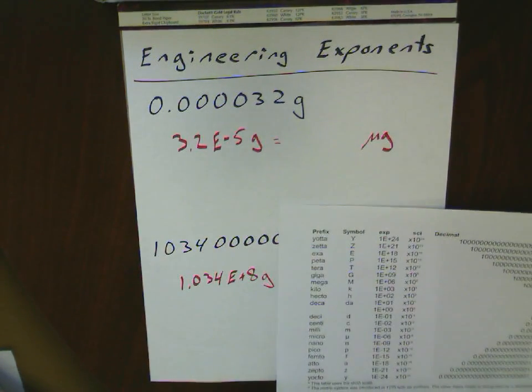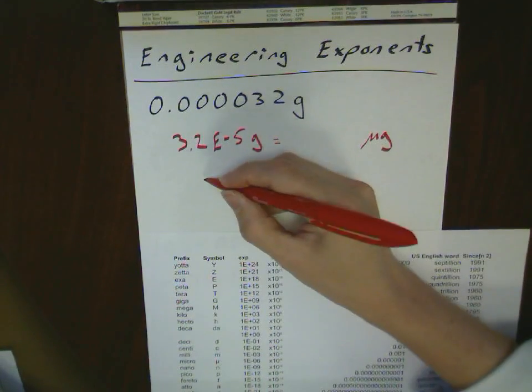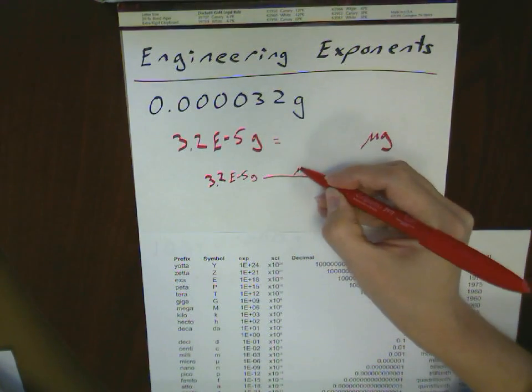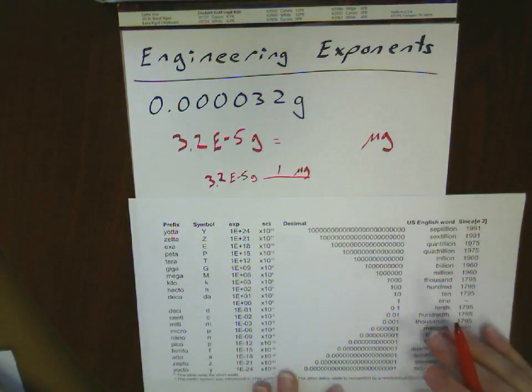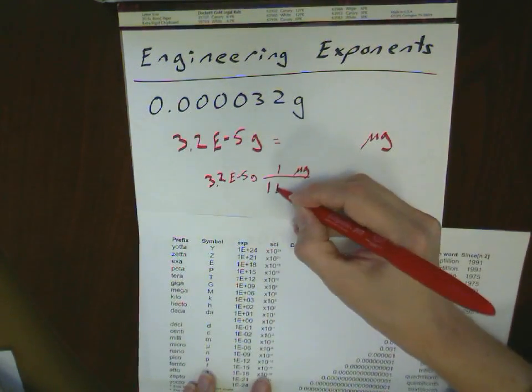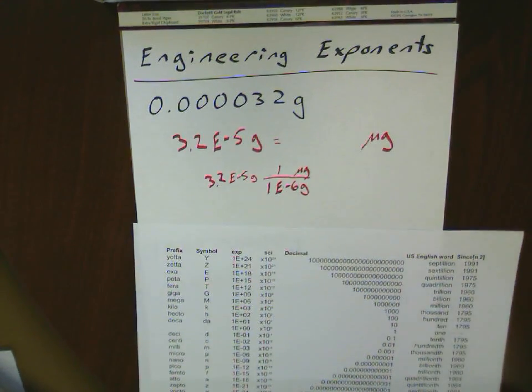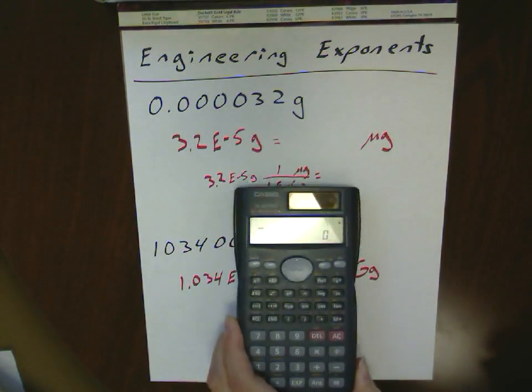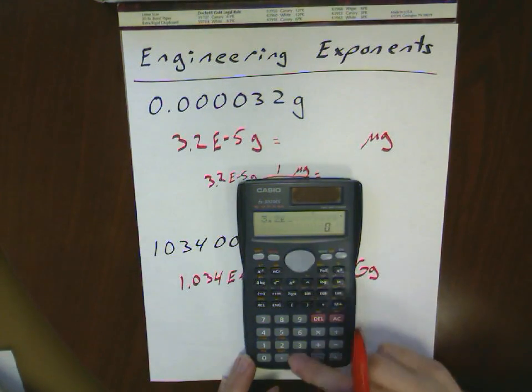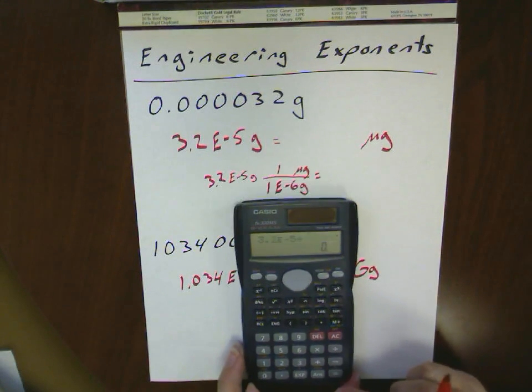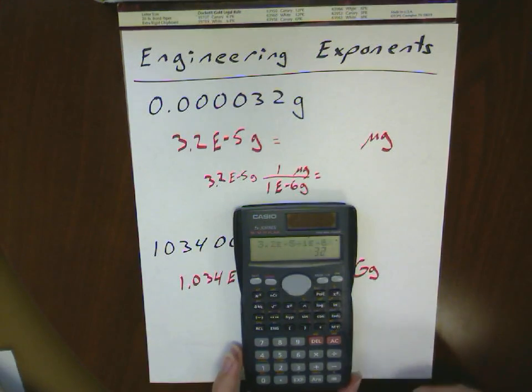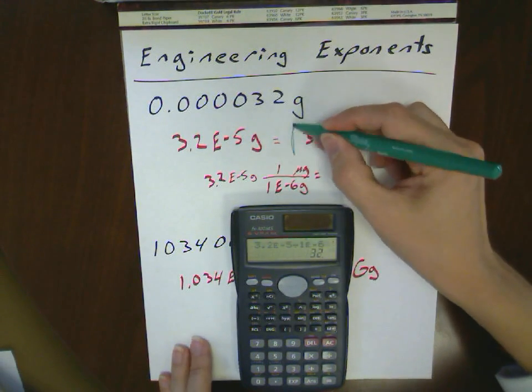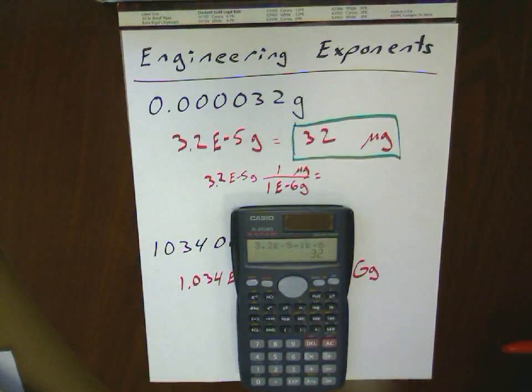When we take a look at these, we can treat it as a normal unit conversion. So in this case, I've got 3.2e to the minus 5 grams. And I want to go into micrograms. And my definition here is that 1 microgram is 1e to the minus 6 grams. That's what our metric table tells us. This is where using your e notation and your normal scientific notation makes it much easier to put it into your calculator. For this problem, I'd have 3.2e to the minus 5 divided by 1e to the minus 6. And that tells me that I've got 32. So our 0.00032 grams is most conveniently expressed as 32 micrograms.